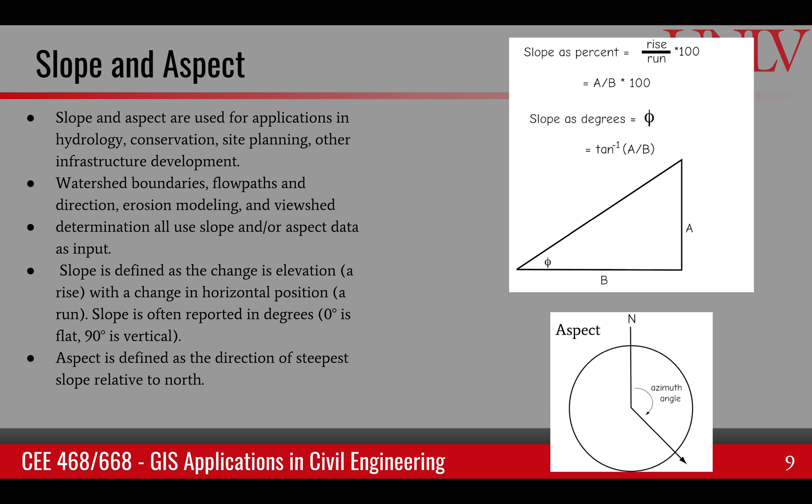Slope and aspect are basically the rise over run and the steepest direction of that slope. They're used in many applications in hydrology, conservation, site planning, and typical urban infrastructure development.